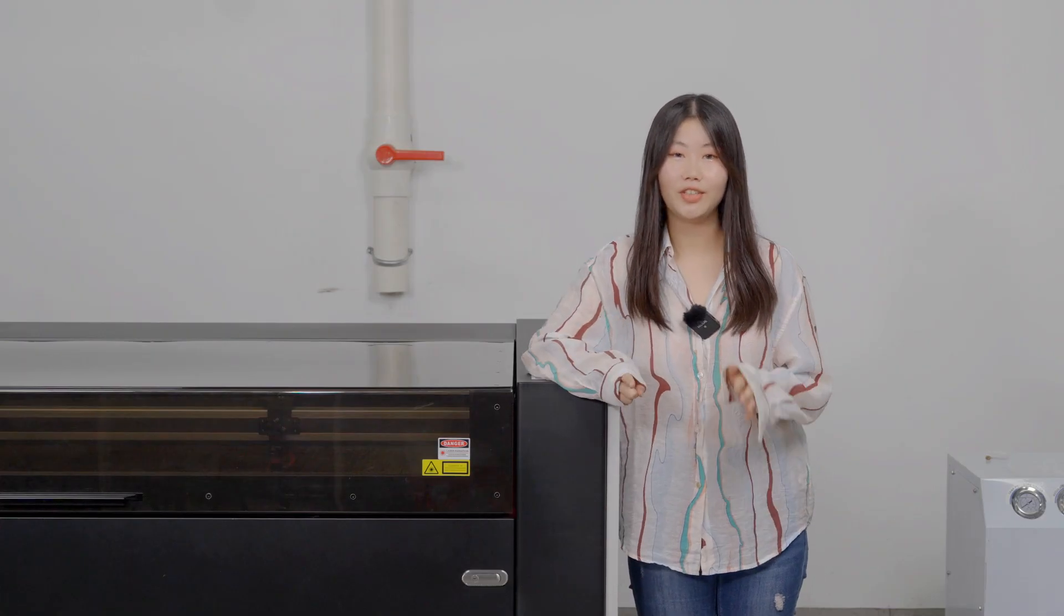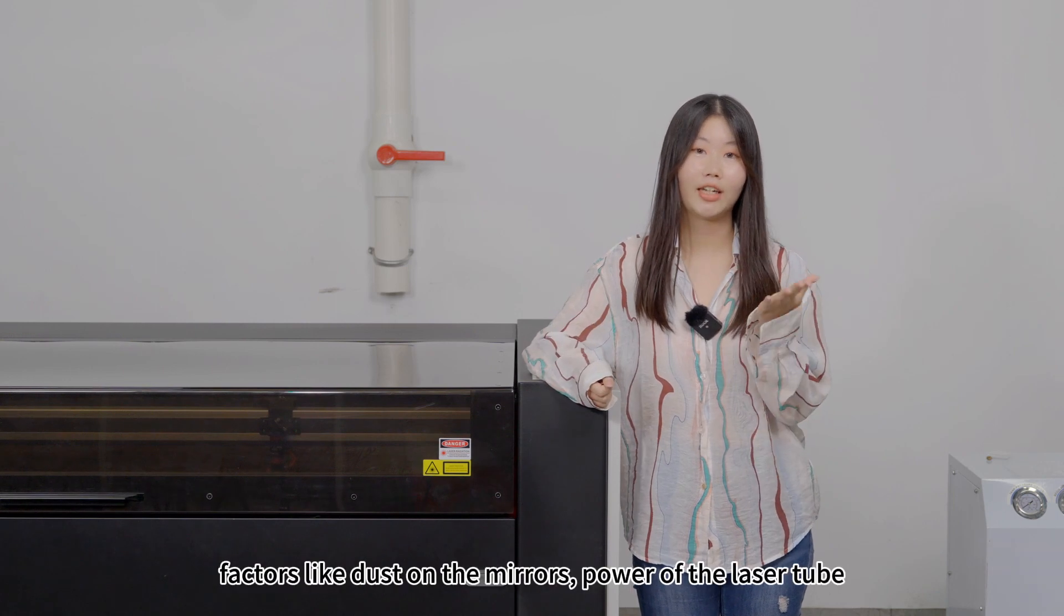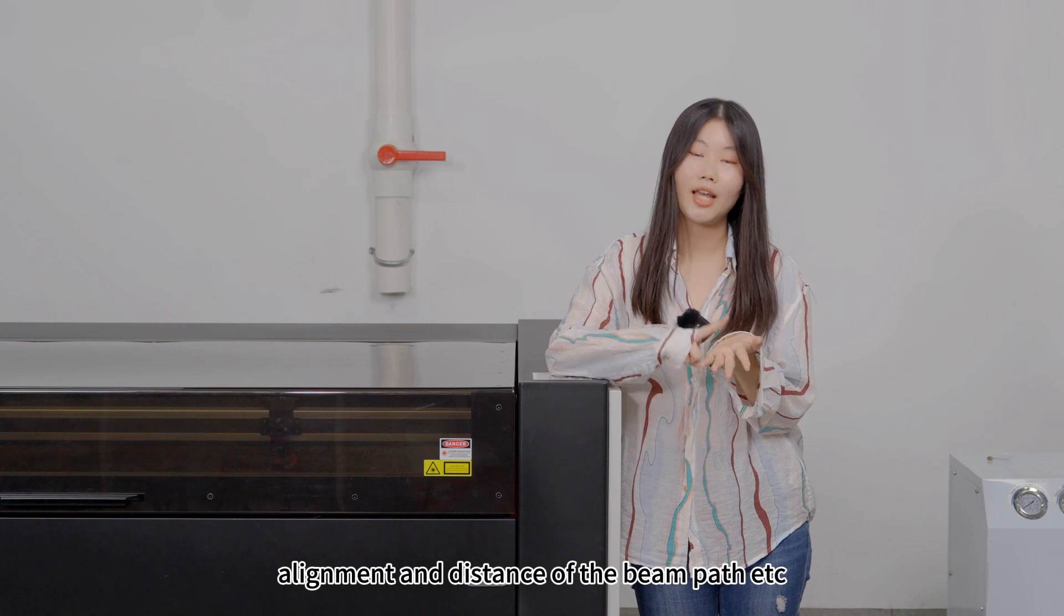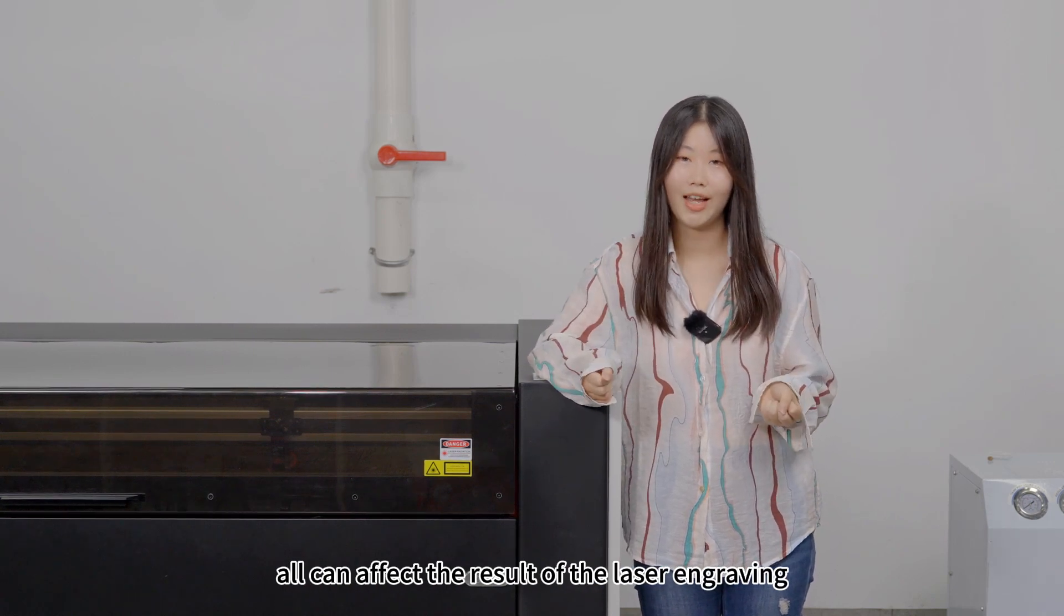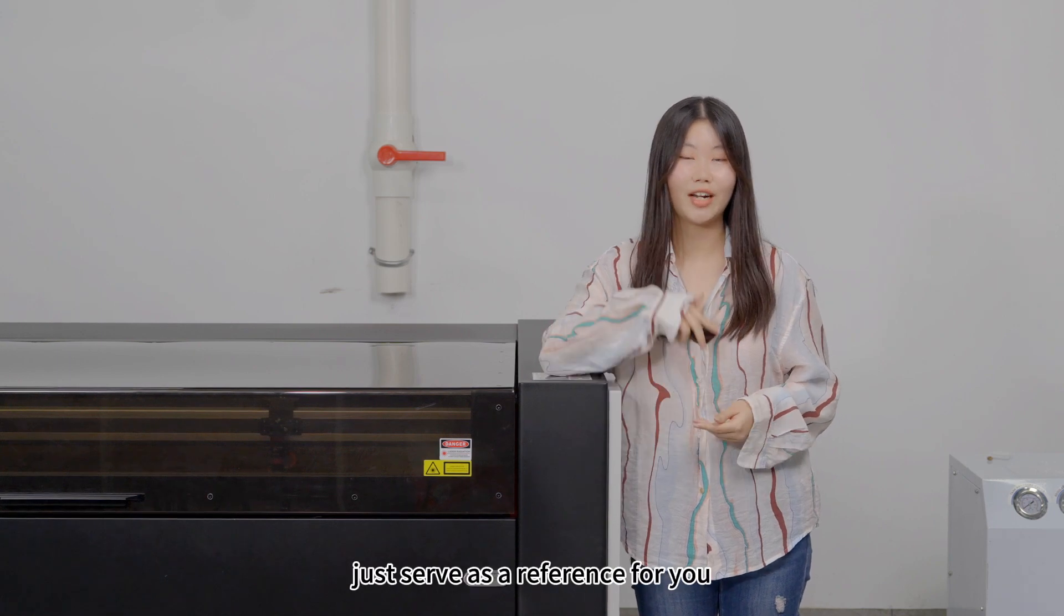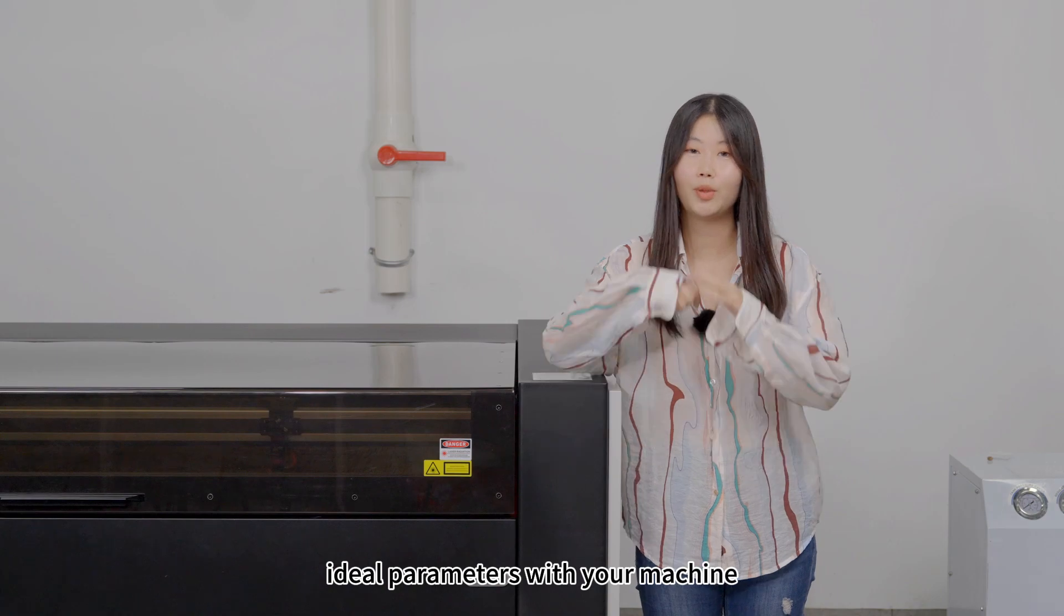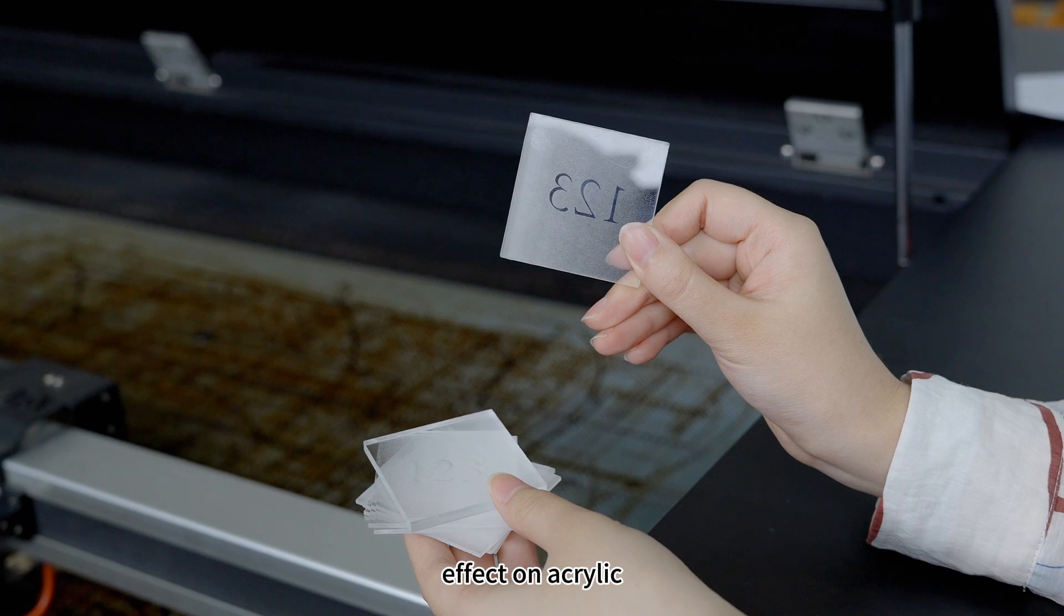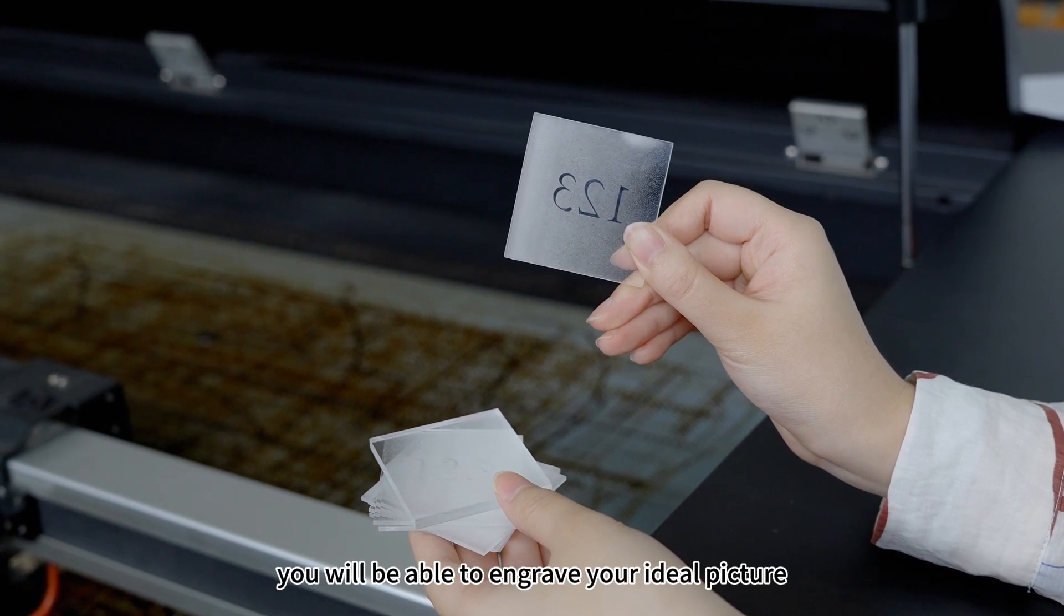Here's the point. Different machine models actually correspond with different parameters. Even the same machine can produce different results under different conditions. Factors like dust on the mirrors, power of the laser tube, alignment and distance of the beam path, etc. all can affect the result of the laser engraving. So the parameters we used just serve as a reference for you. You have to try and select the most ideal parameters with your machine. As long as your parameter setting can get a smooth gradient effect on acrylic like this, you will be able to engrave your ideal picture.